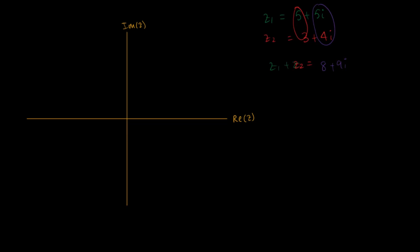If you went on to draw these complex numbers — drawing 5 plus 5i on the Argand plane, five on the real axis and five upwards — you arrive at a point which we join to the origin. This will be Z1.